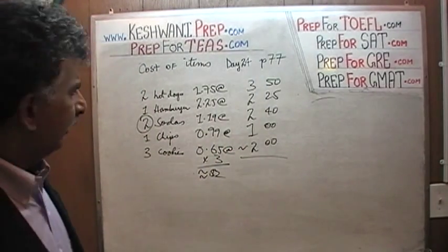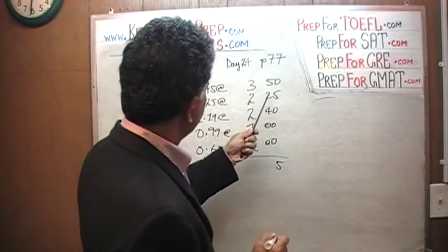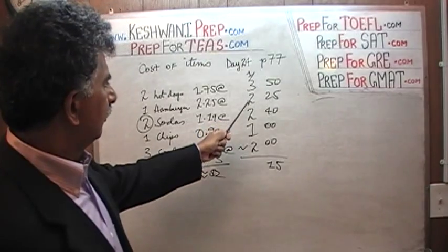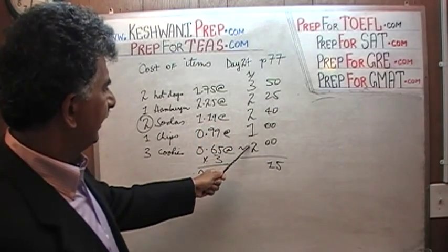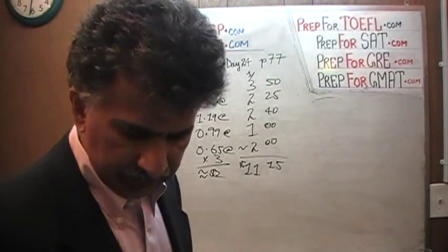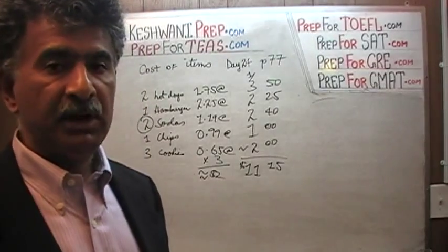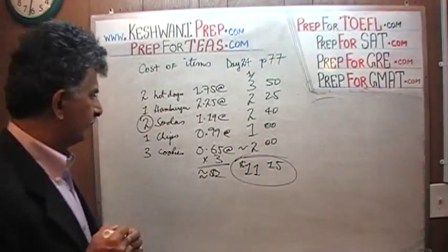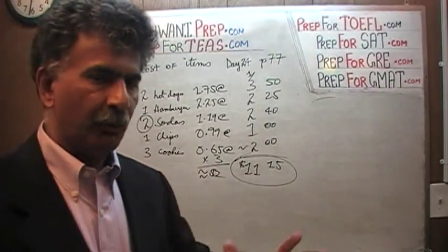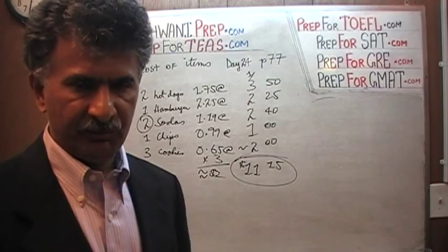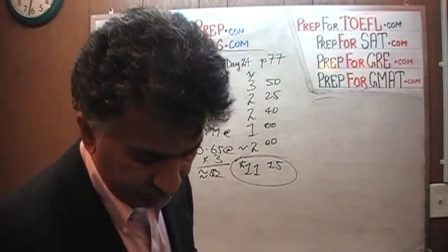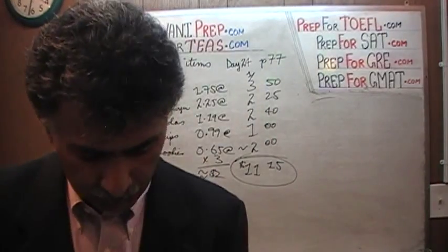So that gives us: 7 plus 4 is 11, gives us 1 carry 1. Then 4 plus 4 is 8, 8 plus 2 is 10, 10 plus 1 is 11. That's a nice yummy lunch for a mere $11.00. $11 is the answer. I'll see you tomorrow — bye now.